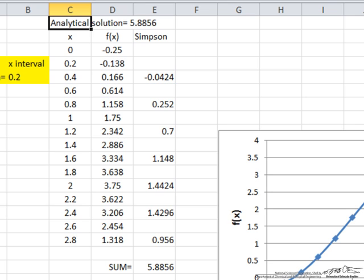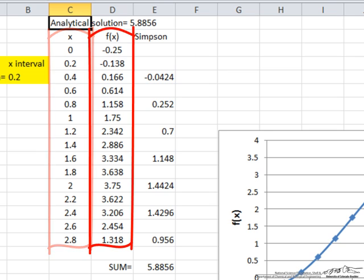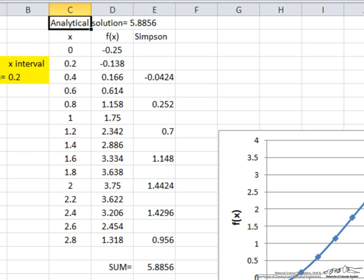But when we've made experimental measurements, and we have measurements, some values for, say this is time and this is concentration, we don't have any functional form, then we can use Simpson's rule to get the area under the curve or the integral f of x dx.